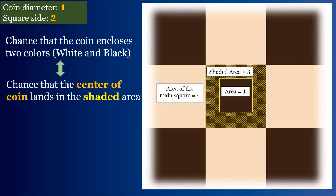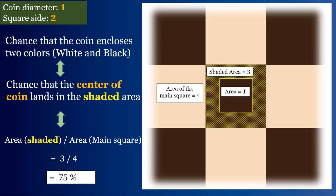And the probability that the center of the coin lands in the shaded area is shaded area divided by total area of the main square. And that's equal to three by four. So the chances of the coin enclosing two colors is 75 percent.